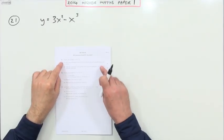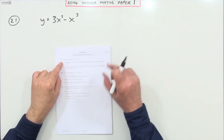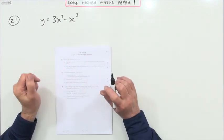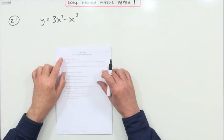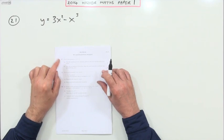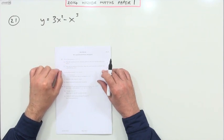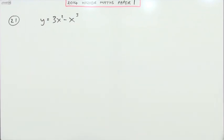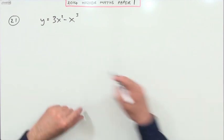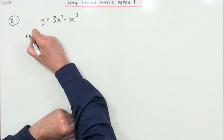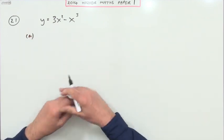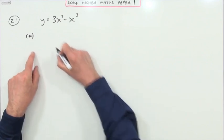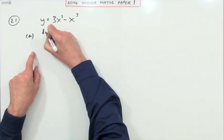Question 21, the first of Section B of the first paper of the 2014 Higher Maths. This is on stationary points and curve sketching — it should be all right, worth eight marks. The first part asks to find the coordinates of the stationary points and determine their natures, so we differentiate.